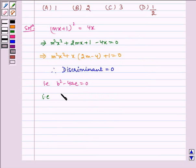That is, (2m - 4)² - 4m² = 0. Which implies, taking 2 common: 2²(m - 2)² - 4m² = 0.